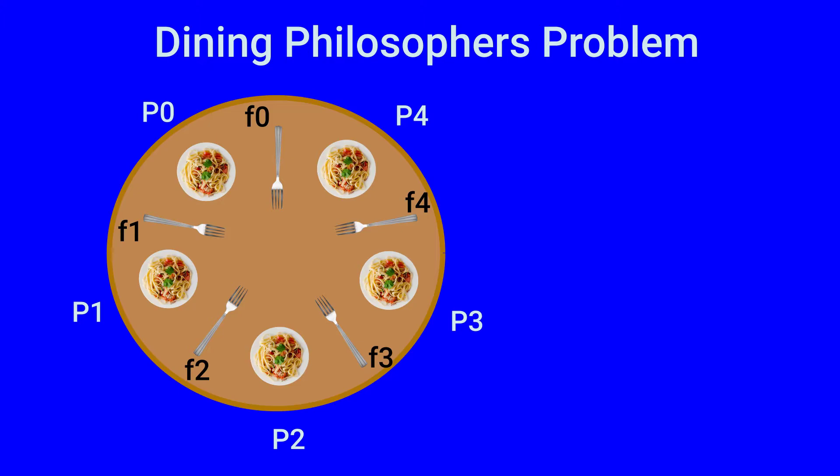What happens to philosopher p4? P4 has forks f0 and f4, and since f0 is already taken by philosopher p0, philosopher p4 must block for fork f0 and not pick up fork f4.